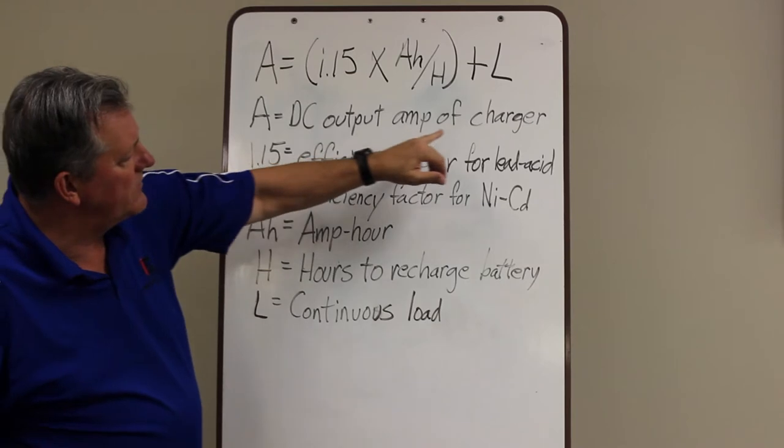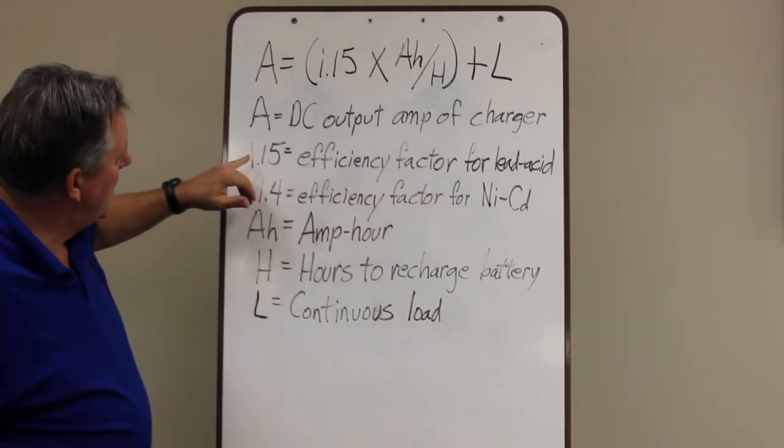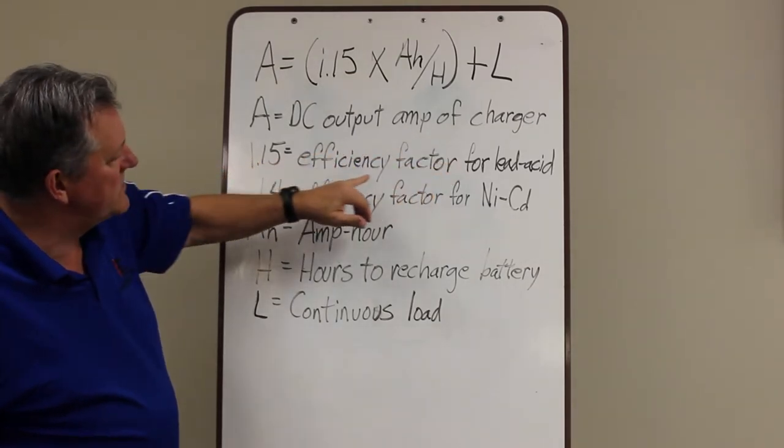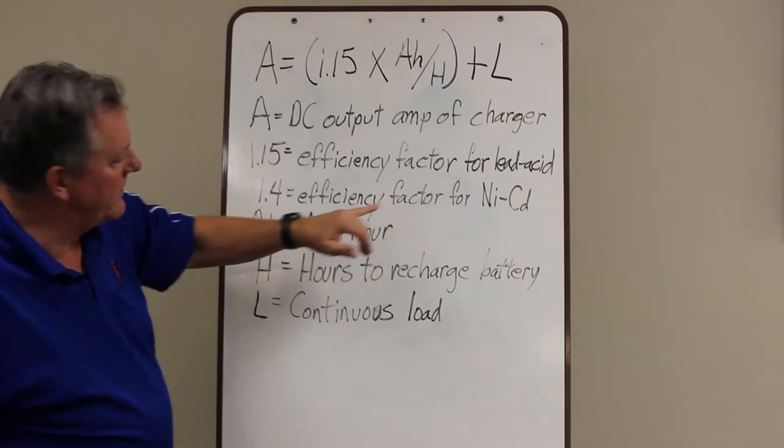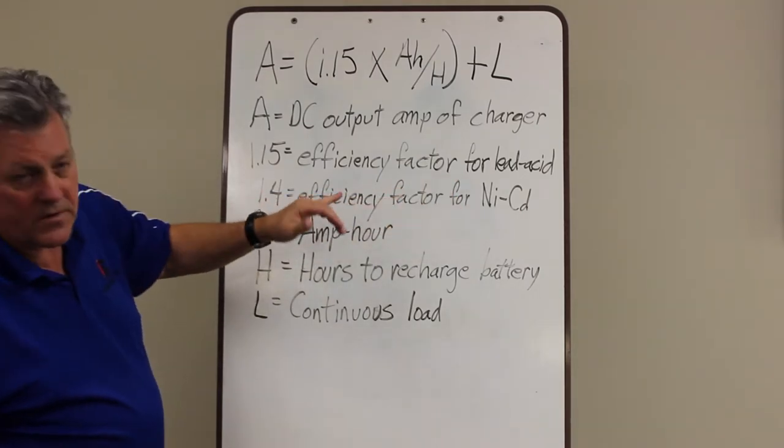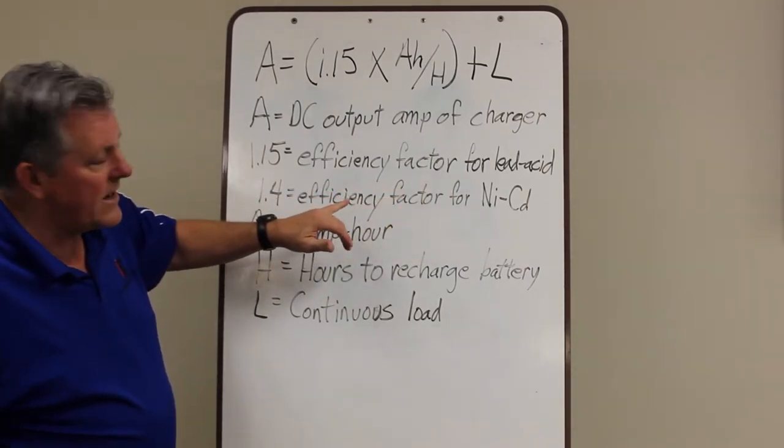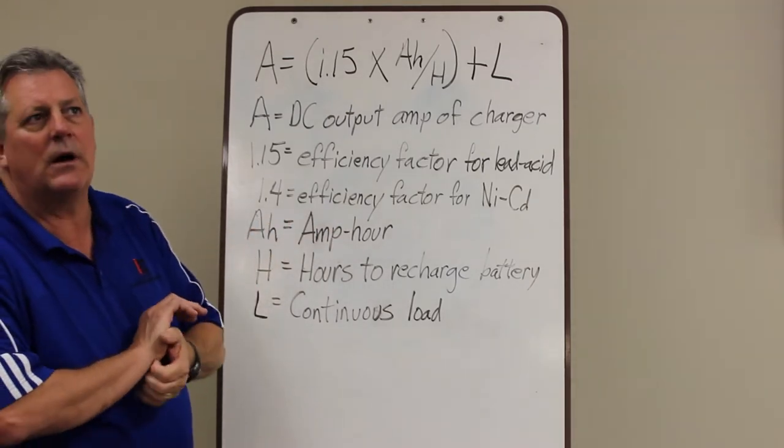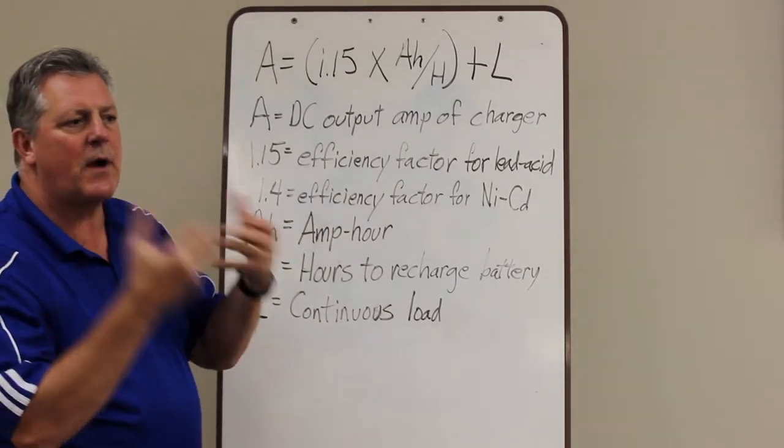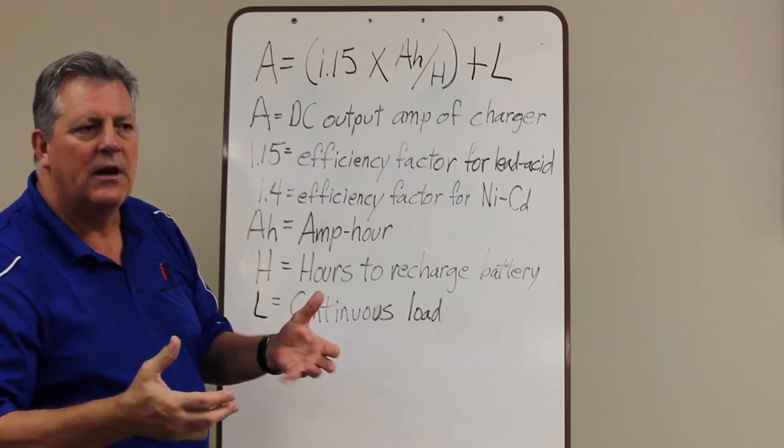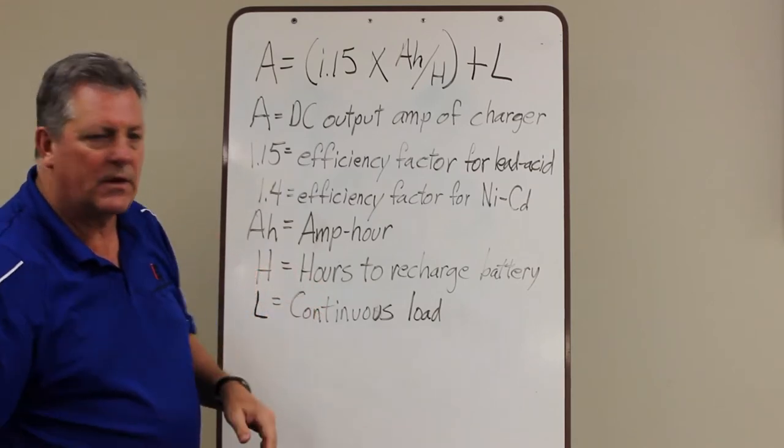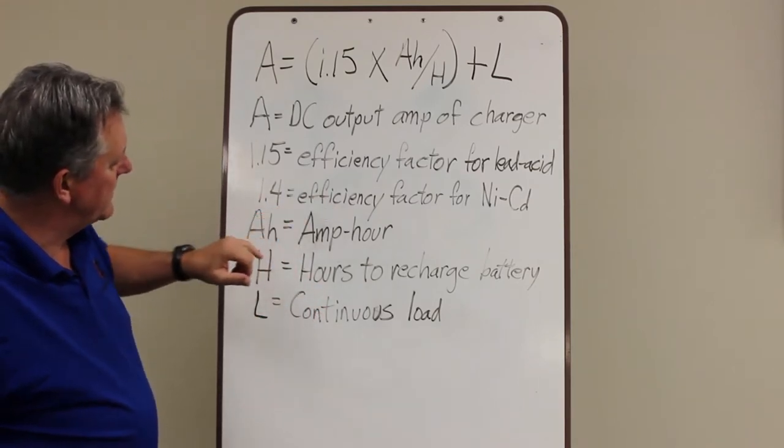A equals the DC output of the charger. That's what you're looking for. 1.15 is the efficiency factor for a lead acid battery. 1.4, that'd be an efficiency factor for a NiCAD battery. That's how efficient, how much power you have to put into the battery to get it to charge up. So each one has a different efficiency ratio.